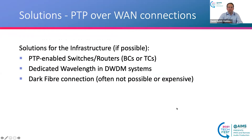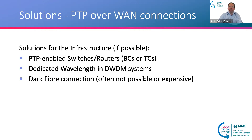What can be the solutions? As Nicolas already said, on the infrastructure side it is always recommended to use PTP-enabled switches and routers — boundary clocks or transparent clocks. You can send PTP over a dedicated wavelength in DWDM systems or get this as a service level agreement from a provider, or rent a dark fiber connection, though this is often not possible or very expensive. Dark fiber removes the effect of active components between your network equipment.